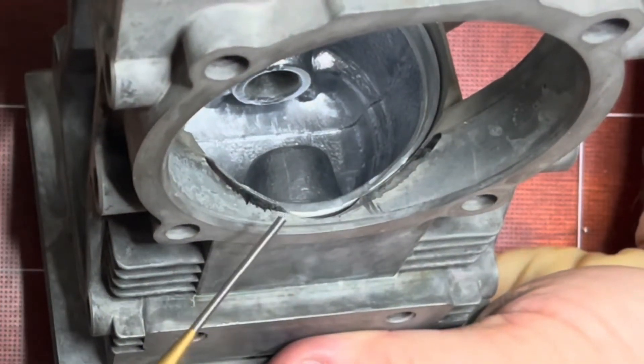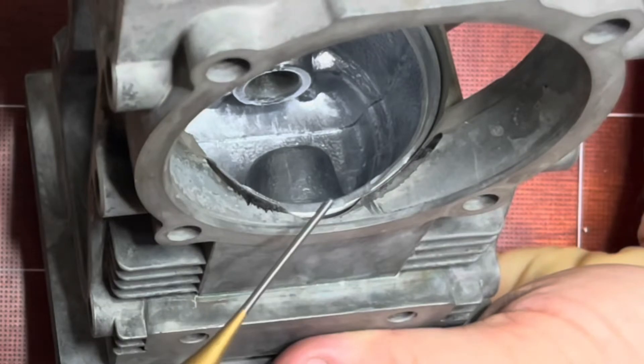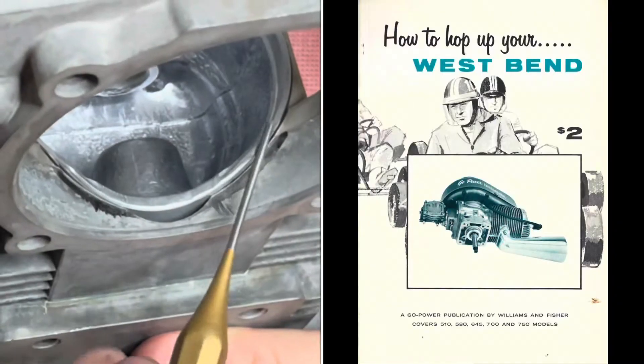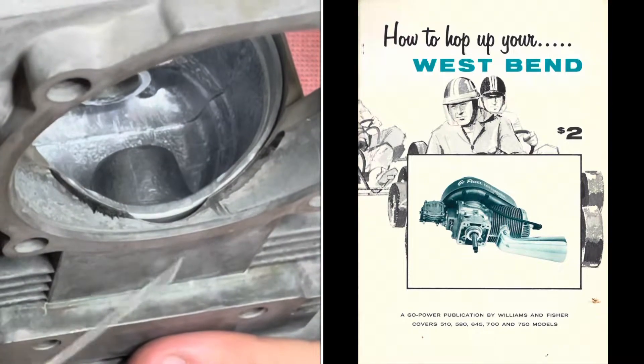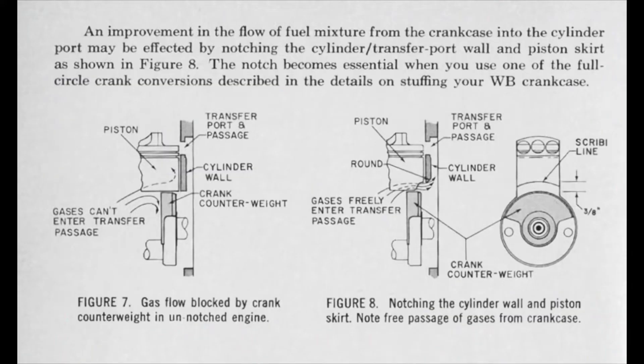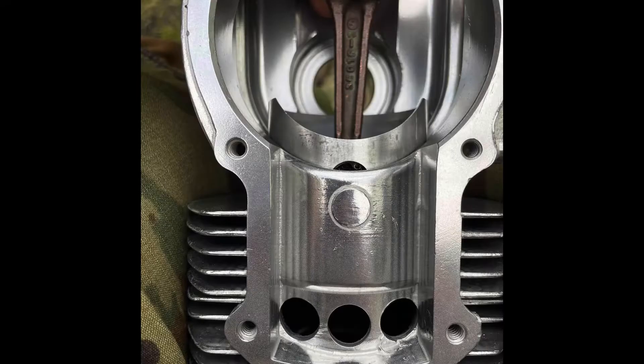...they've done this because on a 510 or a 580 your piston actually comes all the way down here and closes off your transfer ports. On a Westbend 580 the 700 they did this little crescent moon shape so even when you're at bottom dead center your transfer ports are never completely closed off.